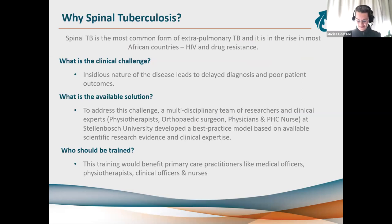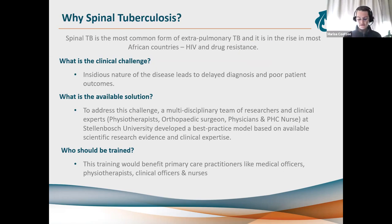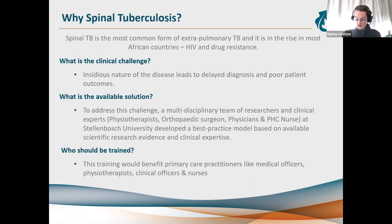Why are we focusing on spinal TB? It is the most common form of extra-pulmonary TB at 50% of cases, and it leads to very high levels of disability and even death. Because of its insidious nature — a very gradual and subtle onset — clinical diagnosis is almost always delayed. Patients are often seen by clinicians when neuromotor complications have already set in. To address this, a multidisciplinary team at Stellenbosch University developed a best-practice model based on scientific evidence.